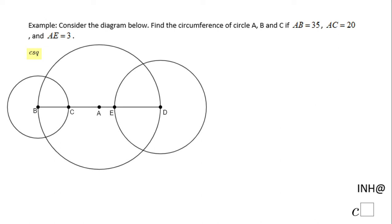Welcome back, I'm here to help at C square. In this example we have a diagram where we can see three circles: circle A, circle B, and circle D. We need to find the circumference of these three circles.